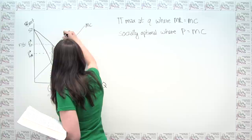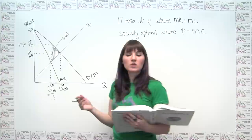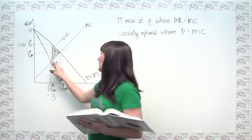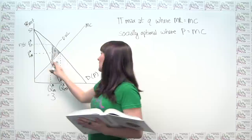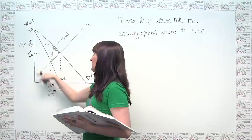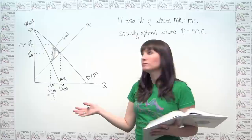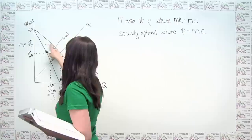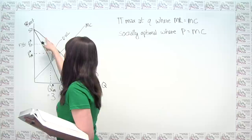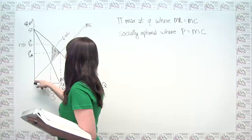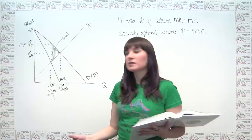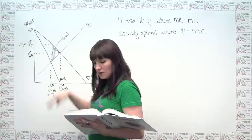The deadweight loss is the sum of all those vertical distances — where consumer value exceeds marginal cost but the units aren't being bought and sold — forming a triangle in this region. You could also calculate it by finding consumer surplus and producer surplus under both perfect competition and monopoly. Under monopoly, consumer surplus is the triangle below the demand curve, above the monopoly price, and to the left of the quantity transacted; producer surplus is the trapezoid below the price and above the marginal cost curve.